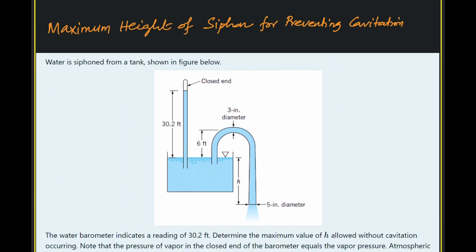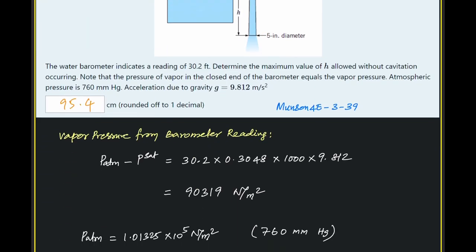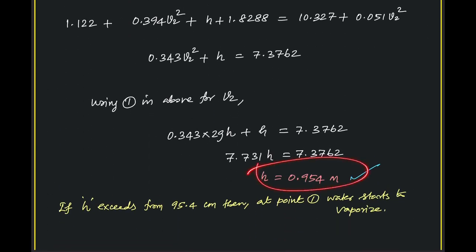To quickly summarize: we need to find the height H. Using the barometer reading, we determine the vapor pressure, which is the minimum pressure allowed at point 1. We find the velocity at point 2 by applying Bernoulli between points 0 and 2, giving V₂ in terms of H. Using continuity, we get the velocity at point 1. Applying Bernoulli between points 1 and 2 with P₁ equal to vapor pressure, we solve to get H = 95.4 cm.